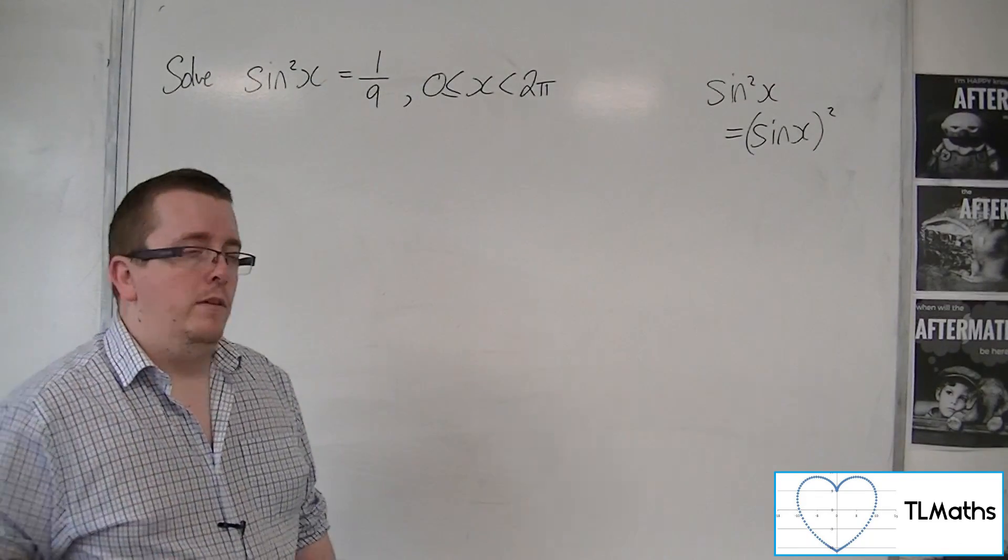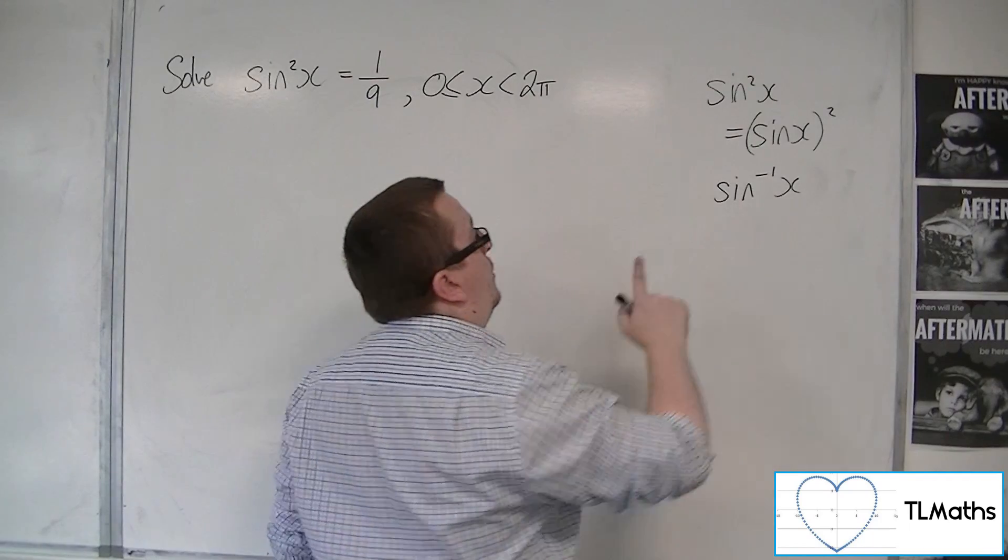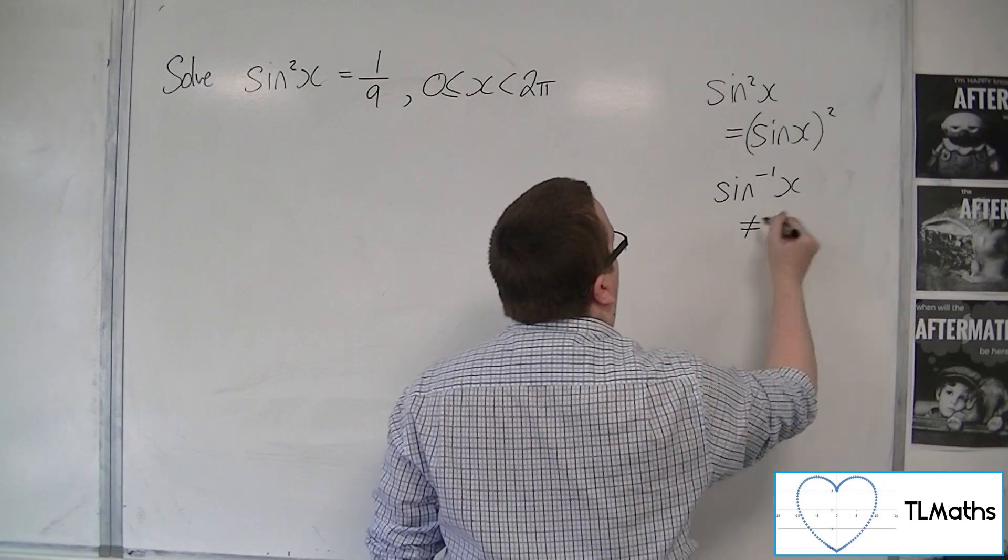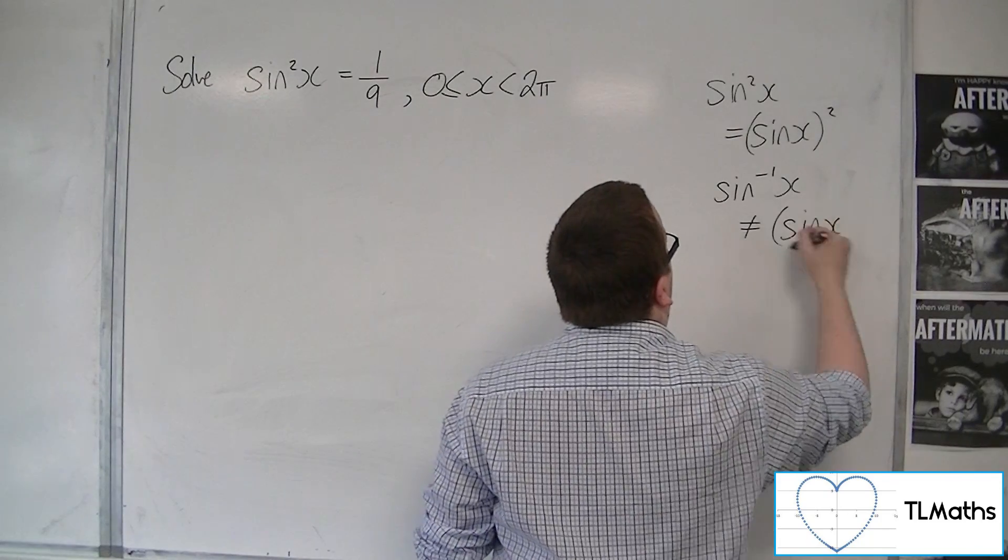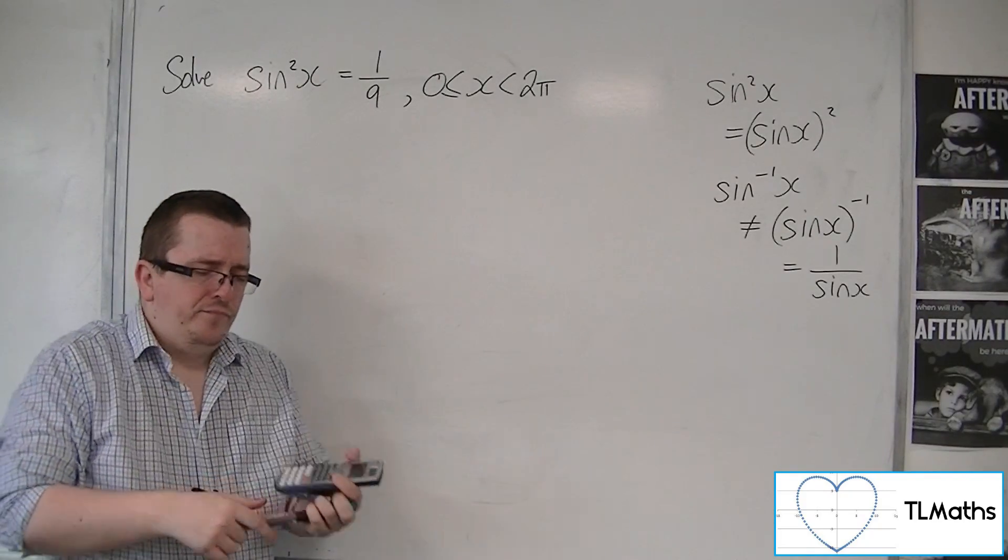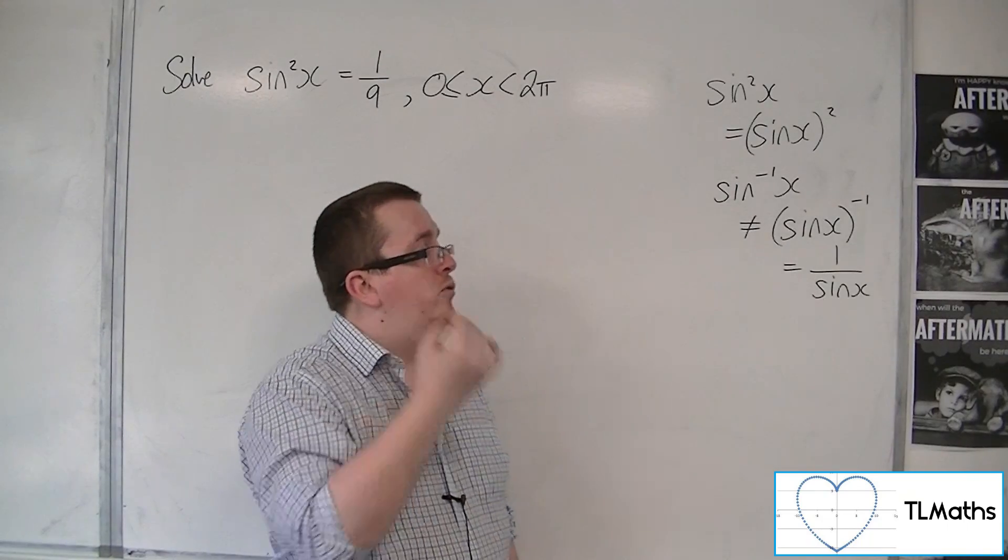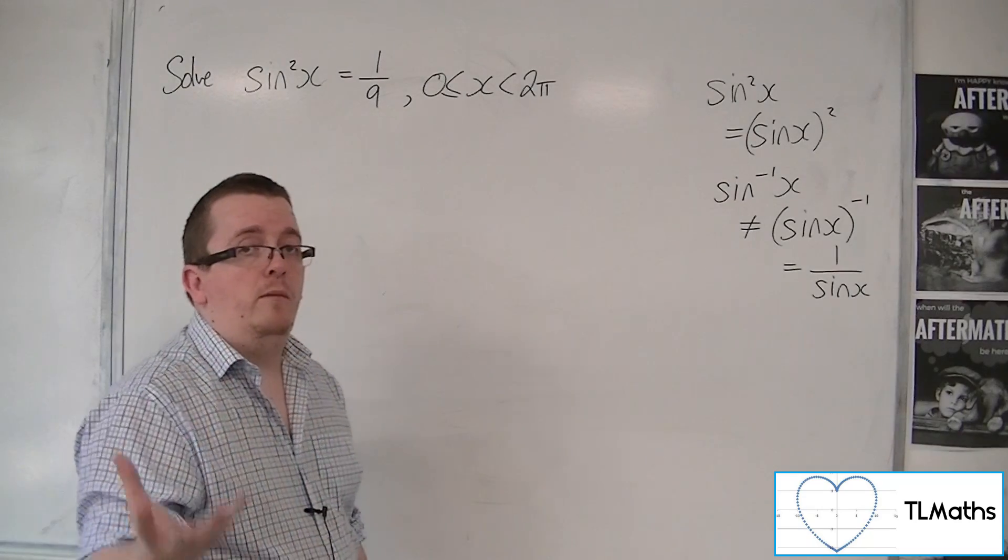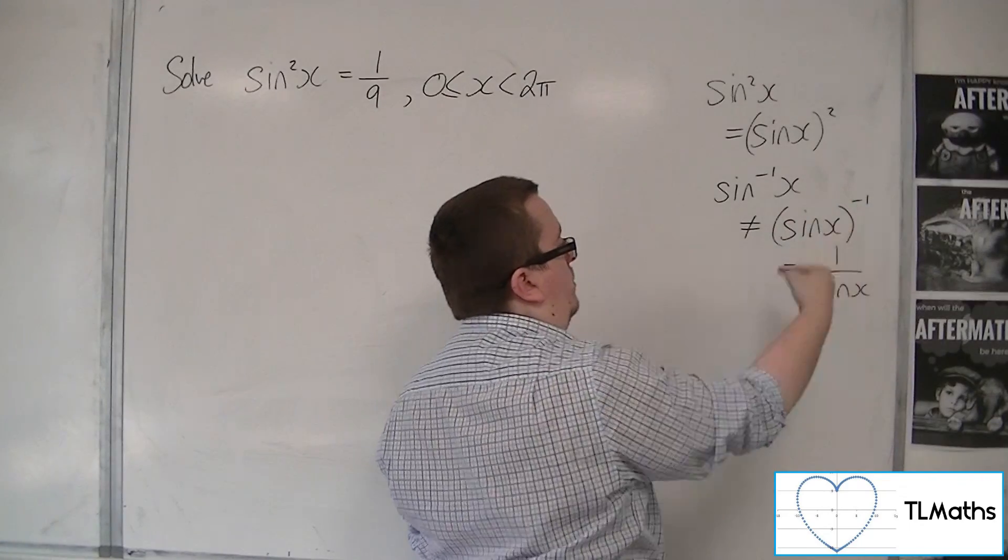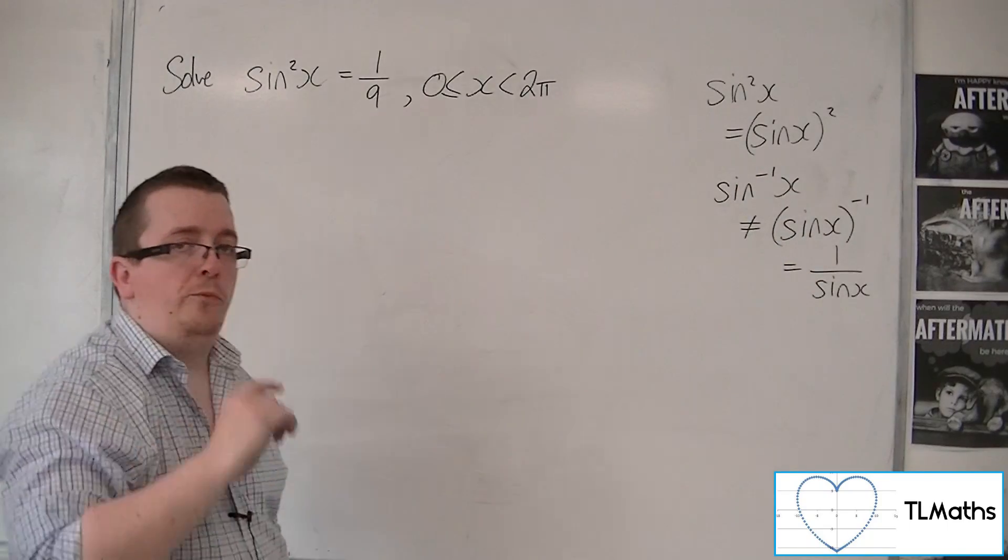But what you must be clear on is that sin⁻¹x, although that index here means squaring the whole thing, this index does not mean sinx to the minus 1, which is 1 over sinx. These two things are actually different. There is a problem with the notation that we use in that it's not perfect. This represents an inverse function. This represents the reciprocal function, so 1 over sinx. These do not mean the same thing. So just be aware of that.